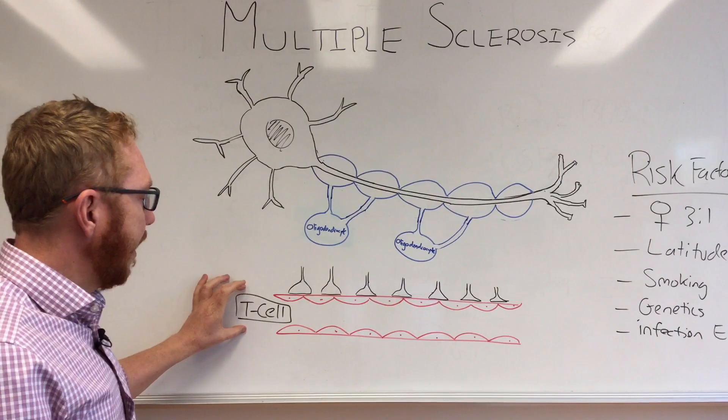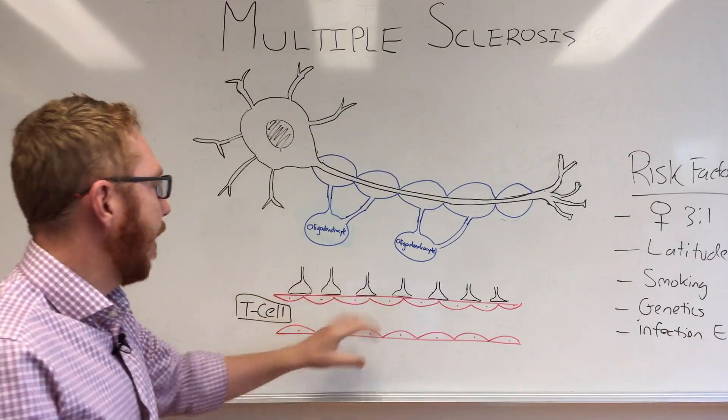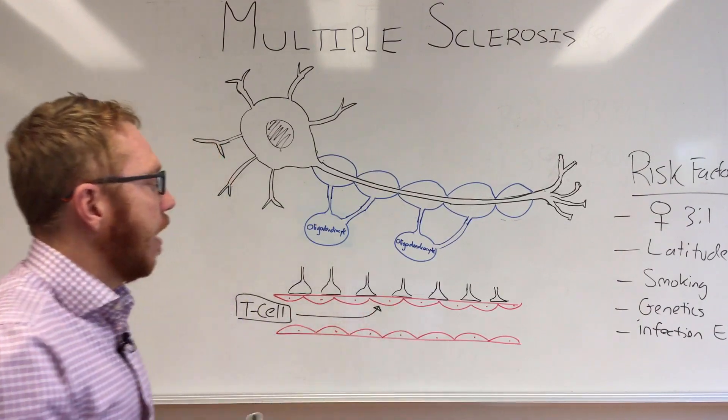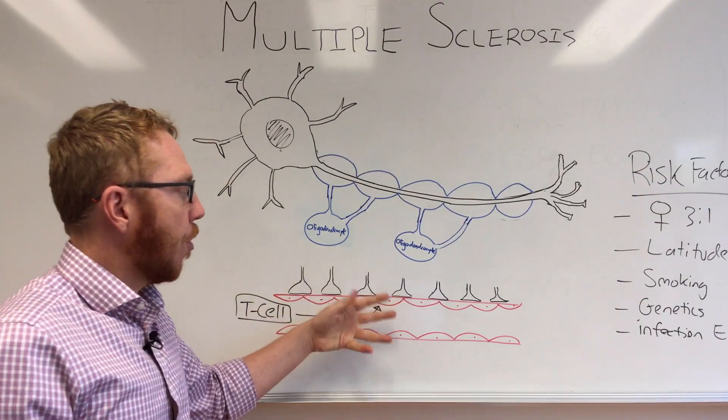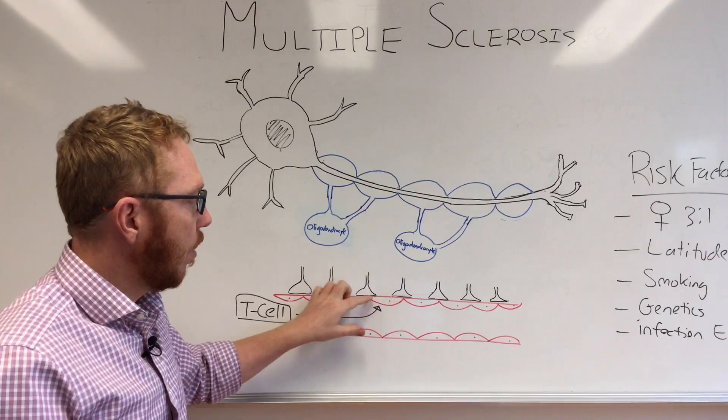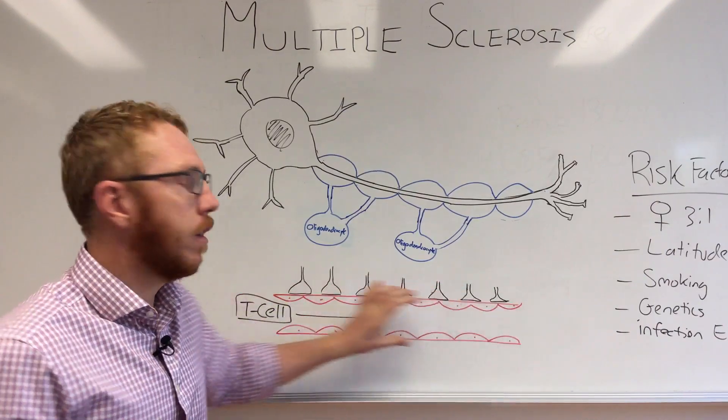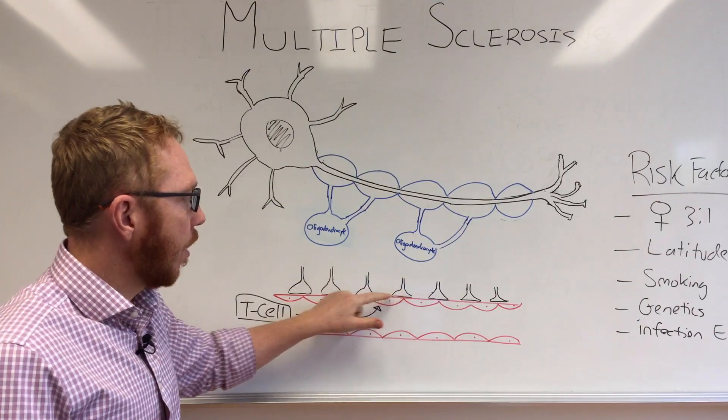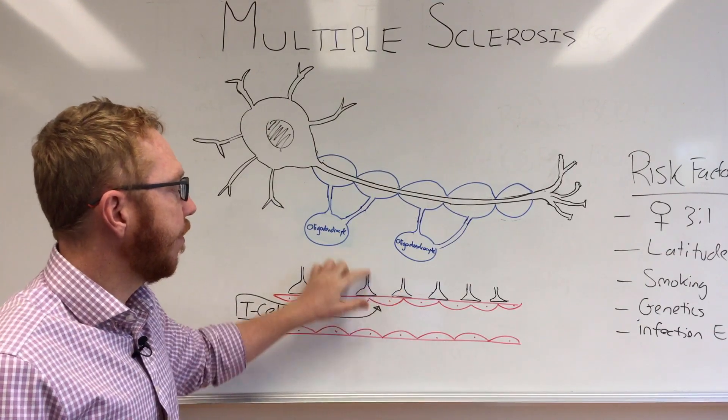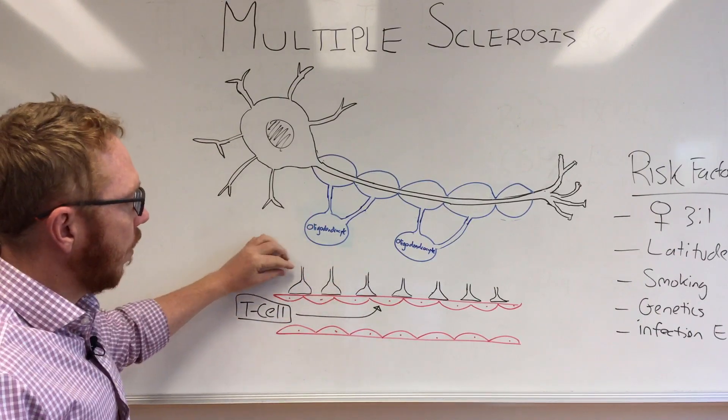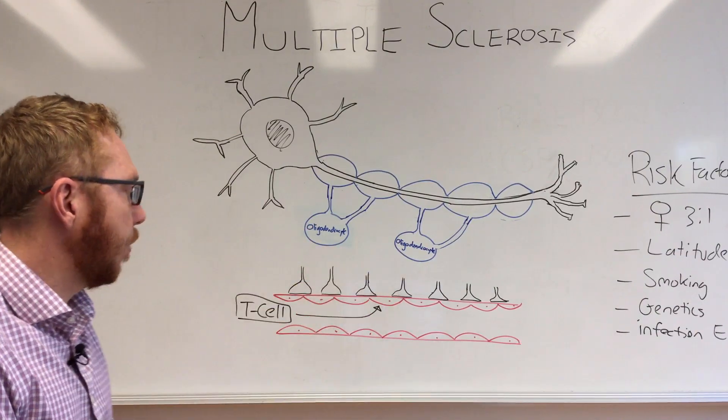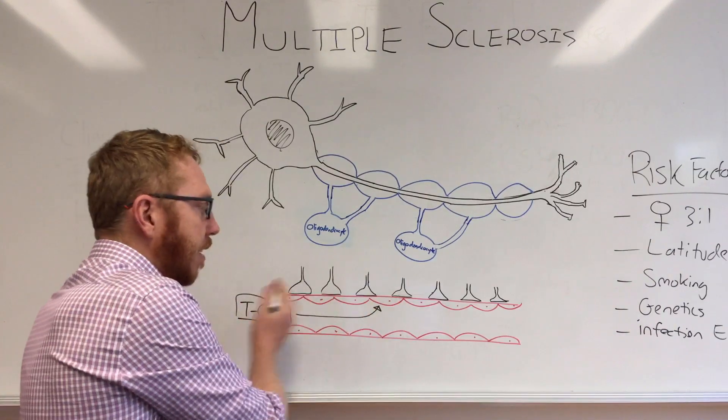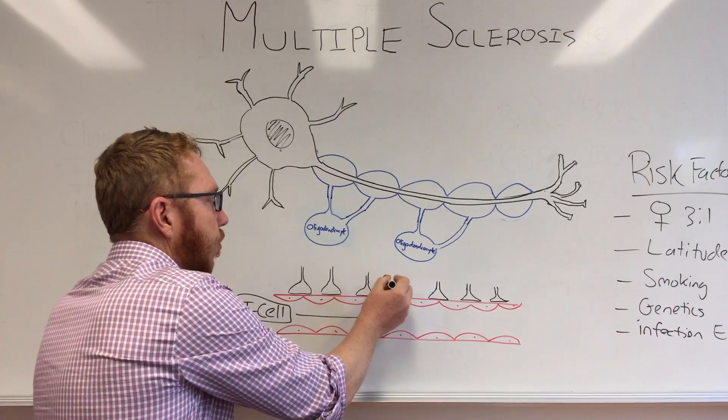When a T cell is activated peripherally it has the capacity to breach the blood-brain barrier. The blood-brain barrier has got three main parts to it: you've got the endothelial cell - this is the blood vessel within the brain - you've got the basement membrane, and then you've got the feet of the astrocytes. I haven't drawn the astrocytes in but these are just the feet associated with it.